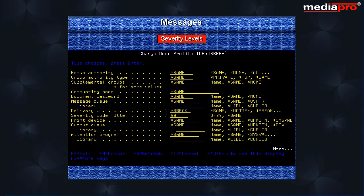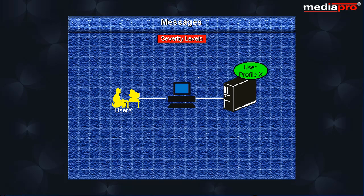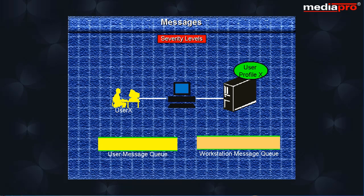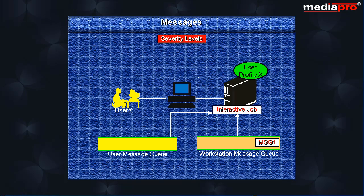For a user message queue, these values can be changed in the delivery and severity parameters in the user profile with which the message queue is associated. When a user signs on at a workstation, both the user message queue and the workstation message queue are allocated to the user's interactive job. The delivery mode of the workstation message queue is automatically set to notify mode, and the delivery mode for the user message queue is set according to the values specified in the user profile. If there are any old messages on the message queue, they will be set to new and the message waiting light and alarm will be sounded.